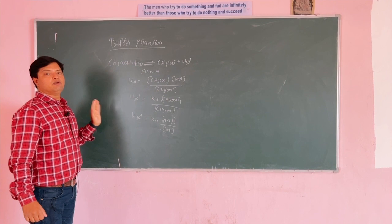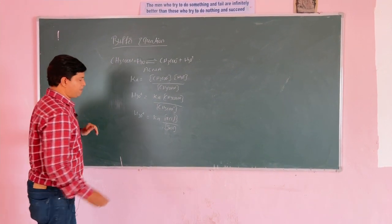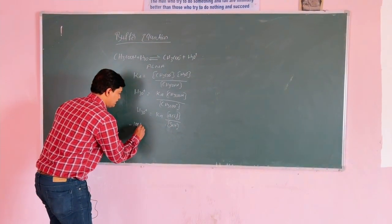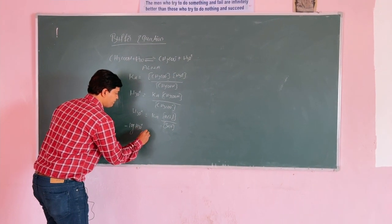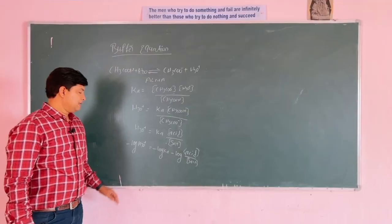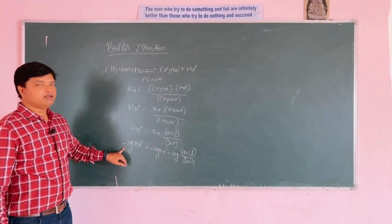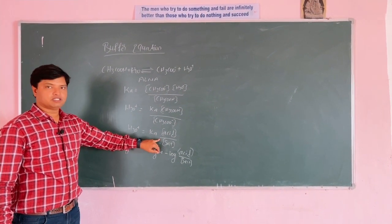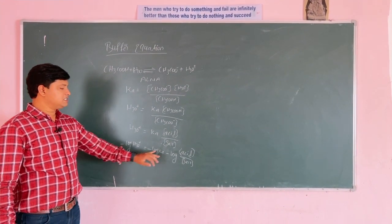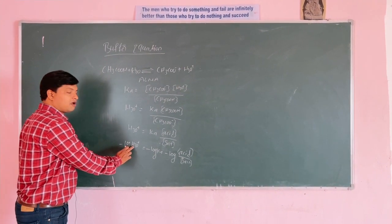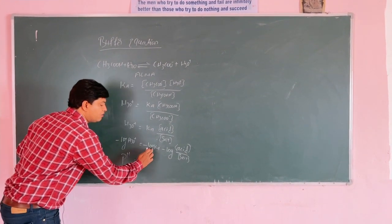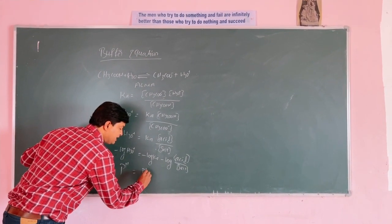Apply the negative logarithm on both sides. Negative logarithm of H3O plus equals negative logarithm of Ka plus negative logarithm of acid over salt. The negative logarithm of H plus ions is called pH, and the negative logarithm of Ka we call pKa.